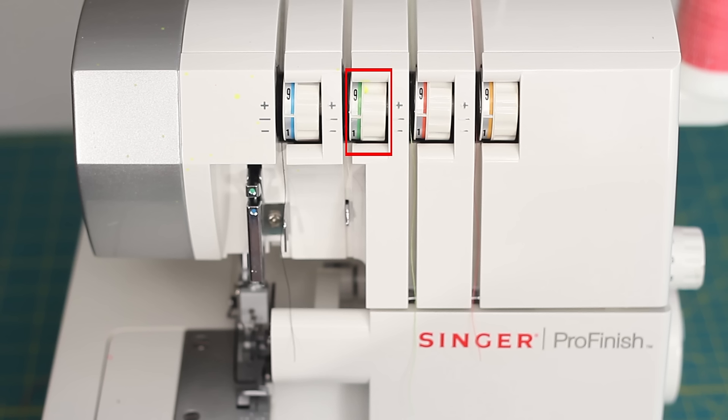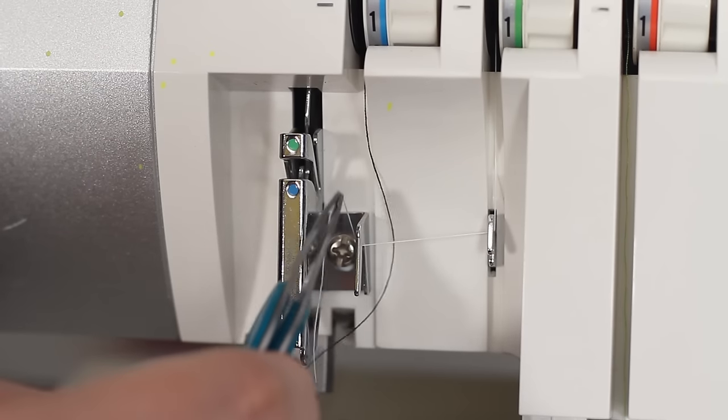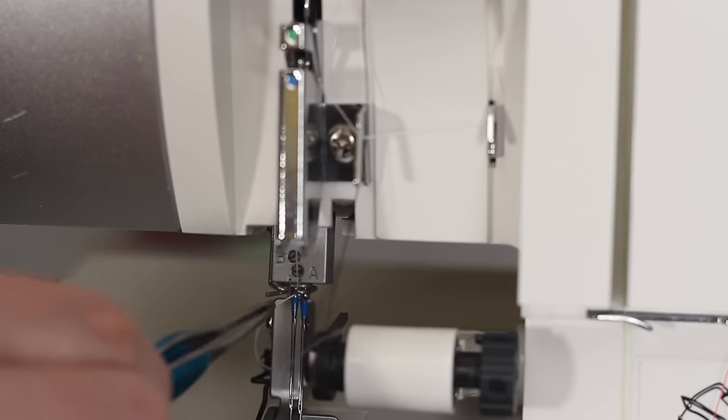First, we'll thread the right needle, which for us is the white thread. Pass it under the first metal clip, and the second metal clip, and up to the green dot, and then down to the little thread holder above the right needle.